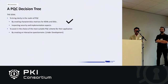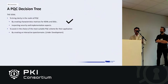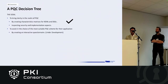The goal of the Decision Tree project is to first bring clarity in the realm of post-quantum cryptography. We're trying to make an overview of all the solutions available and highlight the differences and strong points. Once we have created such an overview, we want to build an interactive tool where a developer can answer questions about their application and, in the end, receive a recommended scheme.